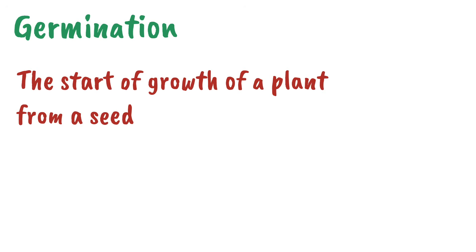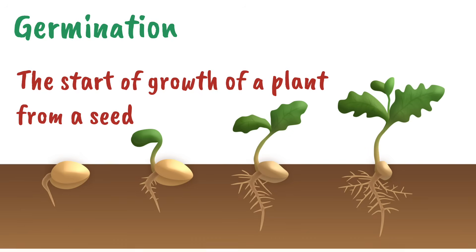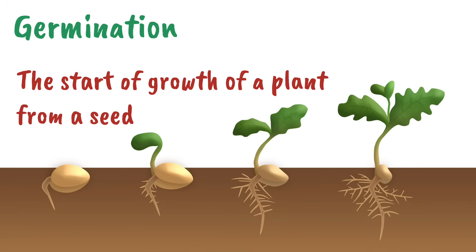Germination is the start of growth of a plant from a seed. It's that first stage where the seed sprouts to become a seedling.